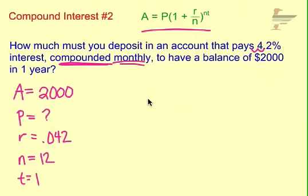So filling this into the equation, 2,000 equals P, we're going to solve for this, times 1 plus 0.042 divided by 12 raised to the 12 times 1 power.